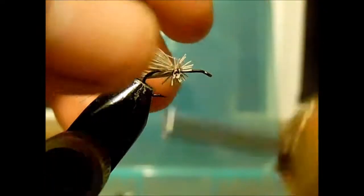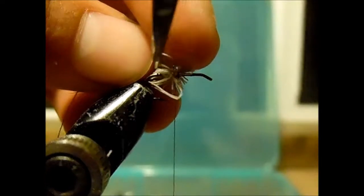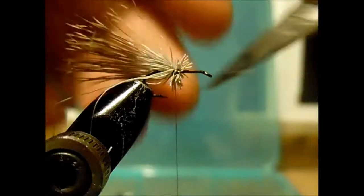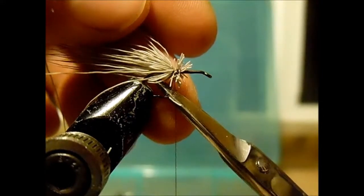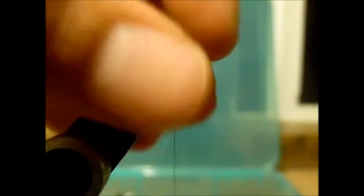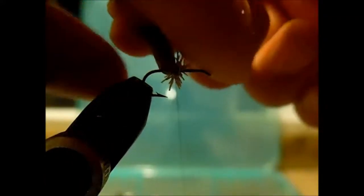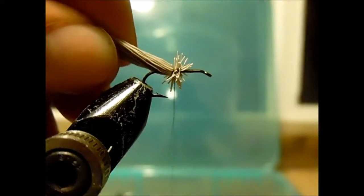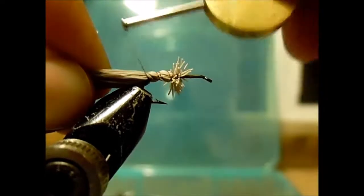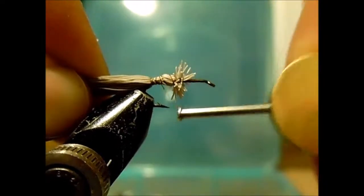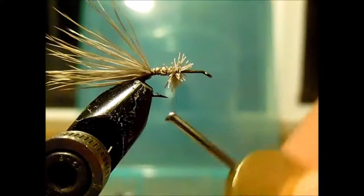And then I'll just start working my way back down towards the bend of the hook. As you can see I sort of need to clean out some of it, because it sort of did spin a little bit. If you need to do that, just take your time and get it to look nice. I'm going to work my way back down towards the bend a little ways. I'm going to wrap back up a little ways just to sort of flatten down that deer hair.